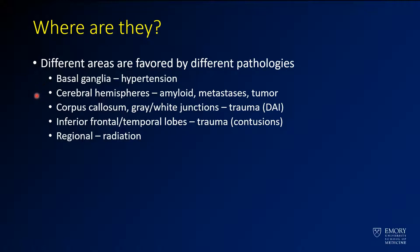If you have involvement of the cerebral hemispheres, statistically you're still thinking about hypertension, but you've got to add other things into that differential — cerebral amyloid angiopathy, metastatic disease, and primary tumors. Trauma is frequently associated with the corpus callosum and gray-white junction versus the inferior frontal and temporal lobe. If you have retinal involvement, you should think about radiation therapy.